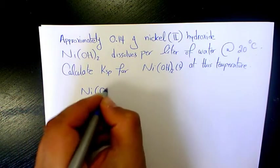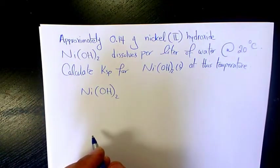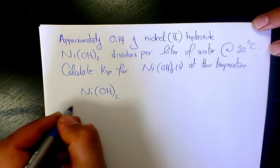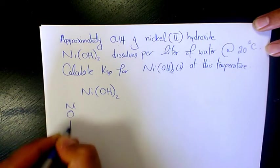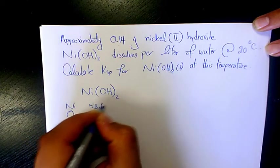The first thing—because grams are given—we need to find the molar mass. To find molar mass, we use the periodic table and read the atomic mass of each element. Nickel is 58.693.